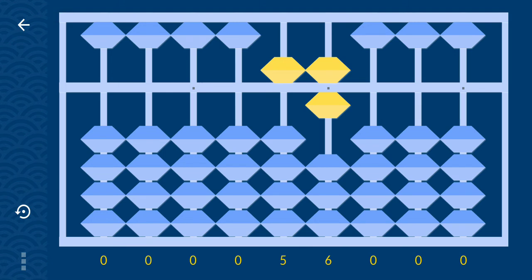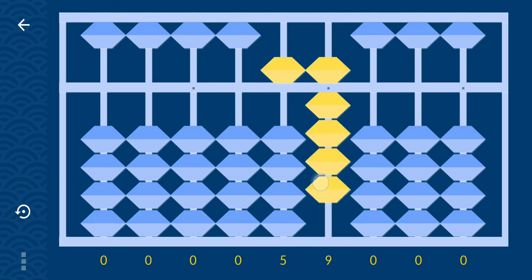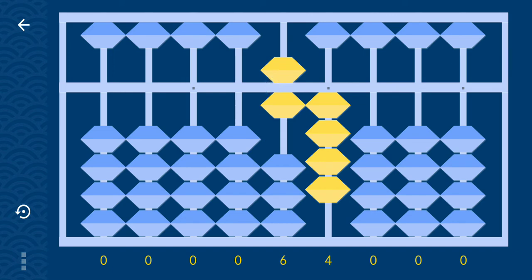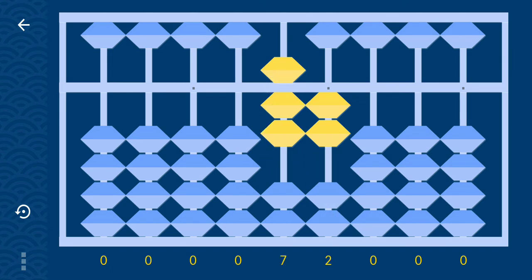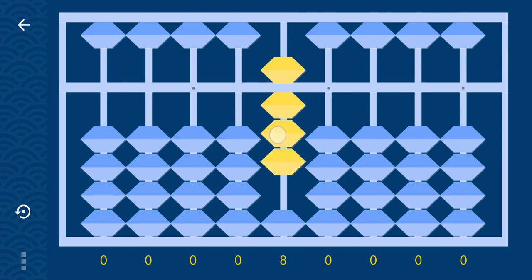Add 8, plus 3, minus 5, plus 10. Add 8, minus 2, plus 10. Add 8, minus 2, plus 10. And the answer is 80. Thank you. Bye-bye.